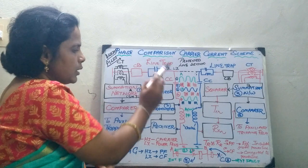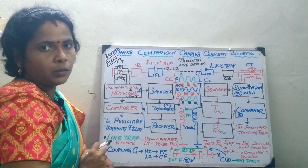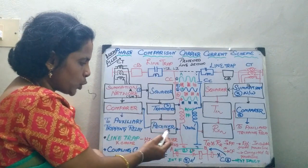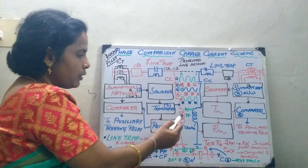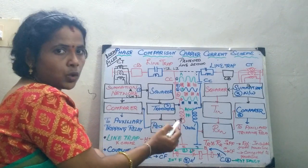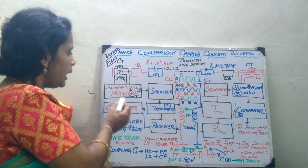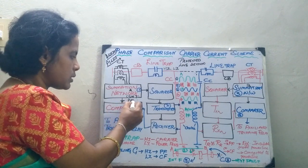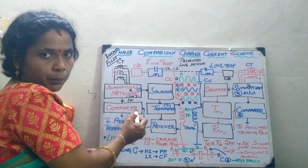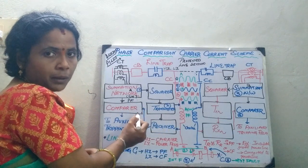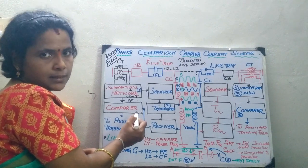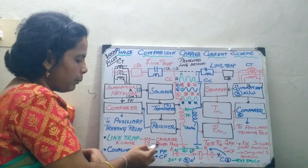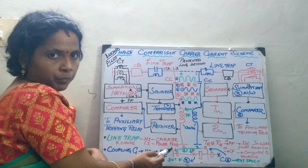The same function is performed by the choke. Whenever a signal is received from the choke to the receiver, it should be a power frequency signal only, because the input signal is a power frequency signal. So whenever comparing, it should be a power frequency signal and not a high carrier frequency signal. The choke offers low impedance to the power frequency.